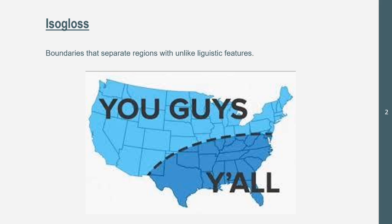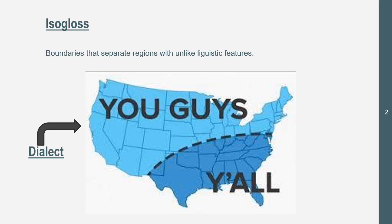The map shows an isogloss, and this is also a dialect. A dialect is where there's one language; however, depending on where you are, that language will have different pronunciations or a different way it is written. This map is an isogloss and also a dialect, because the isogloss shows the boundary of where they say 'you guys' and 'y'all,' while the dialect is saying 'you guys' or 'y'all' — basically just pointing out to multiple people.